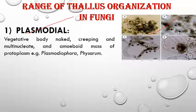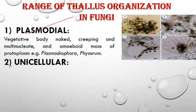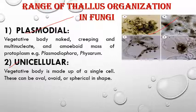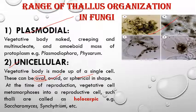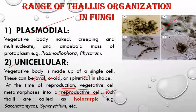The second form is unicellular. A single cell represents the full thallus of the fungus. That single cell may be oval, ovoid, or spherical in shape. At the time of reproduction, the whole cell gets converted into a reproductive cell — this type of fungus is known as holocarpic fungi, where 'holo' means the whole body gets converted into a reproductive unit. Examples include Saccharomyces and Synchytrium. Saccharomyces cerevisiae is the scientific name of yeast.